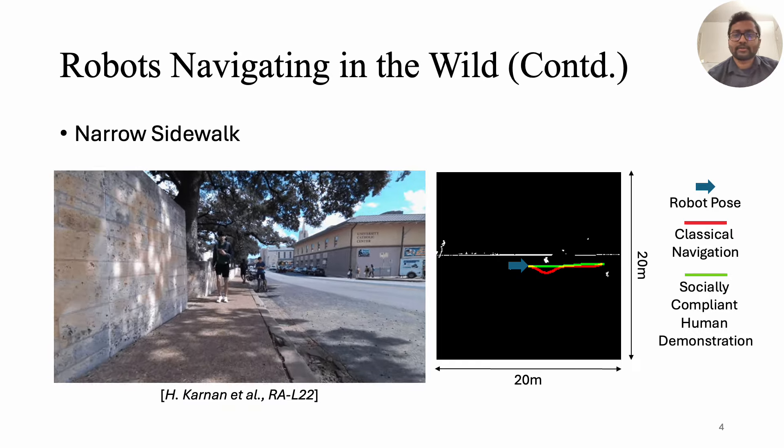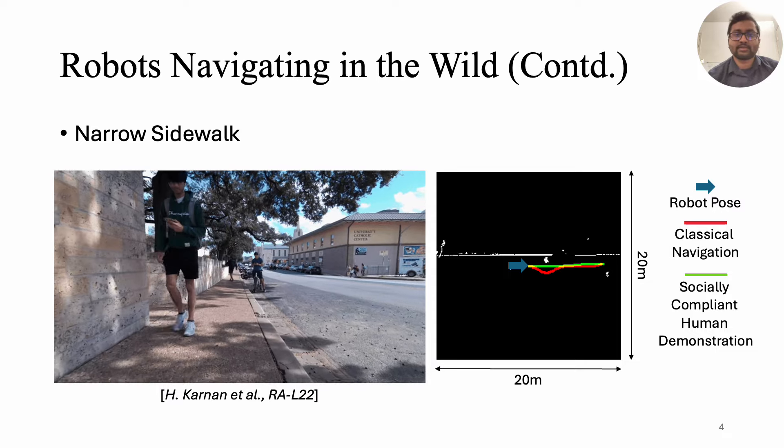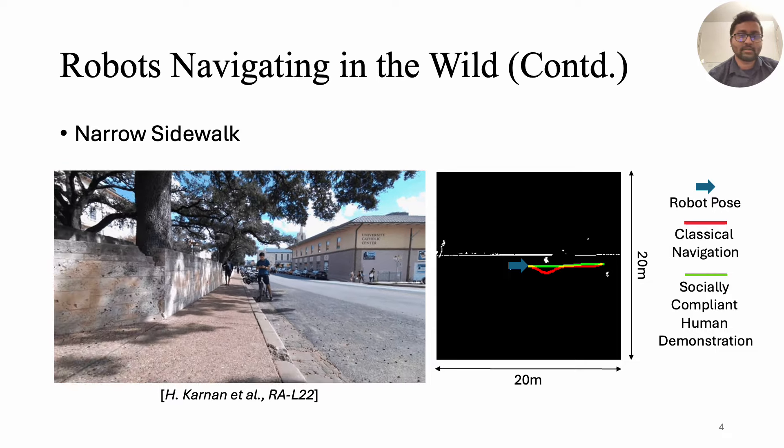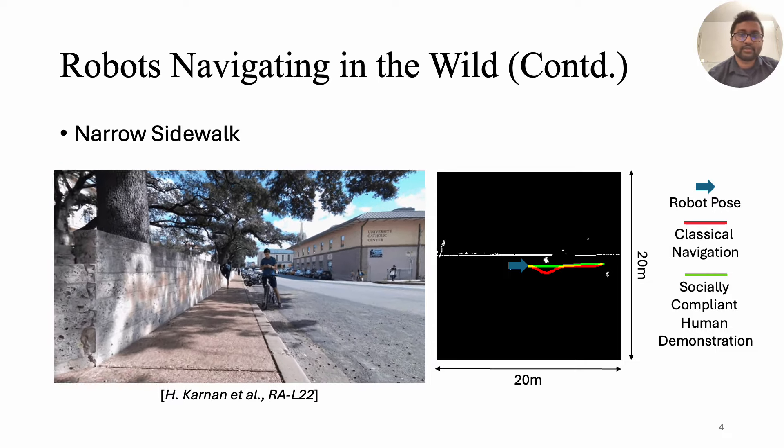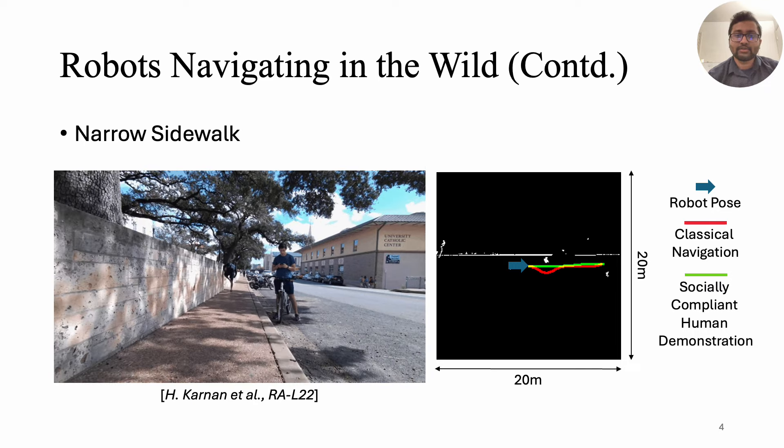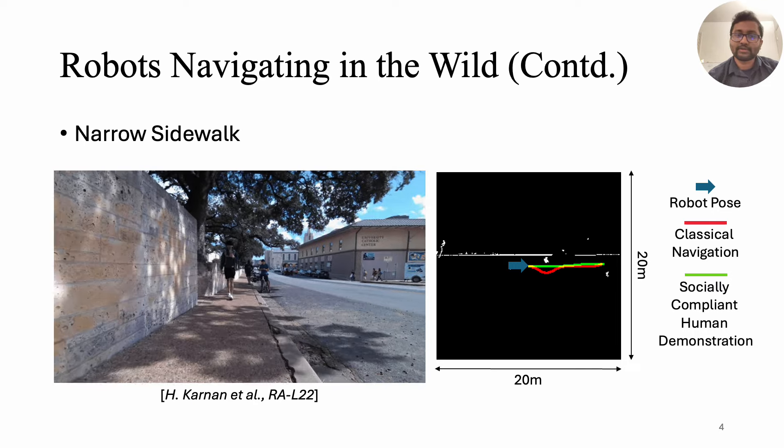In another example, on a narrow sidewalk, the traditional navigation system moves off the path to avoid someone coming the other way. However, a more human-like approach knows it's okay to stay close and just keeps going straight.